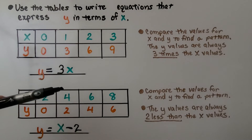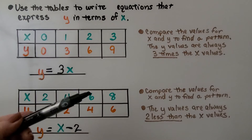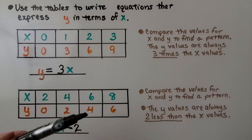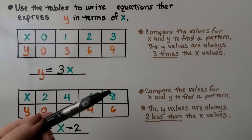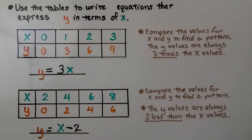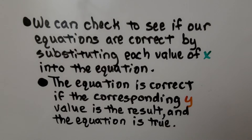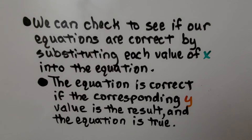We can check our equations by substituting each value of x. If we do 4 minus 2, we get 2. If we do 6 minus 2, we get 4. If we do 8 minus 2, we get 6. The equation is true. We check if our equations are correct by substituting each value of x; the equation is correct if the corresponding y value is the result.